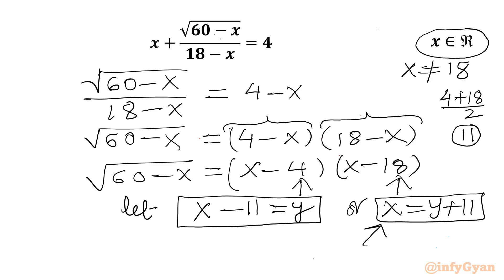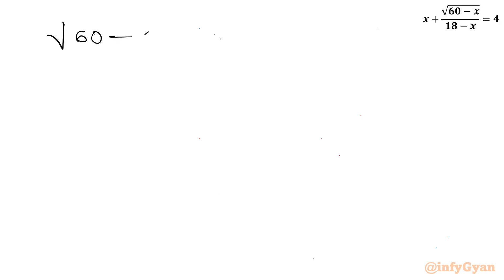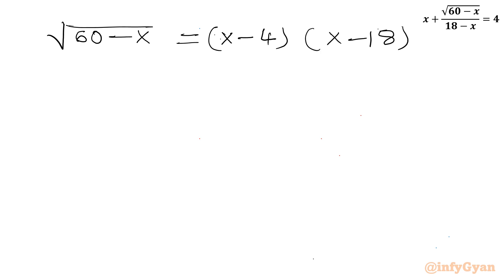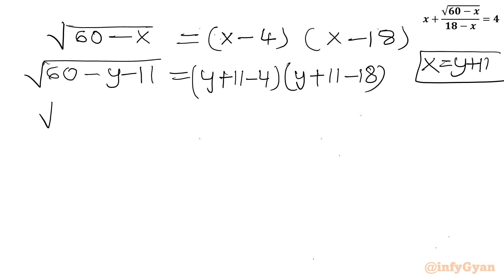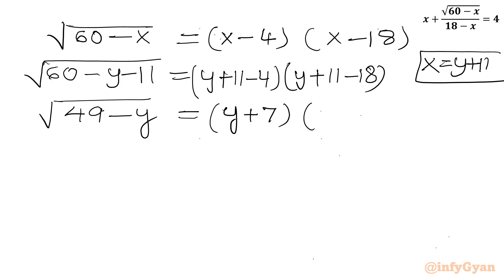Let us apply the substitution x equal to y plus 11 to our equation: square root (60 minus x) equals (x minus 4)(x minus 18). Substituting gives square root (60 minus (y plus 11)) equals (y plus 11 minus 4)(y plus 11 minus 18). So the left side becomes square root (49 minus y), and the right side becomes (y plus 7)(y minus 7).